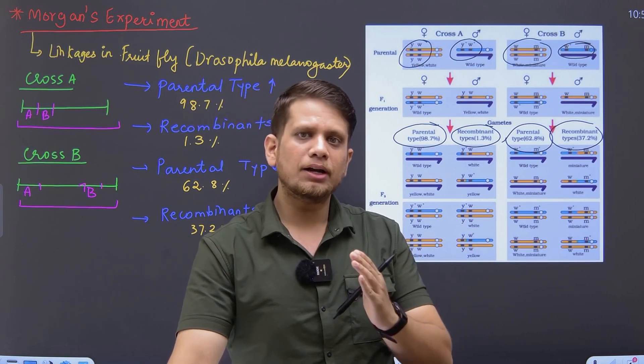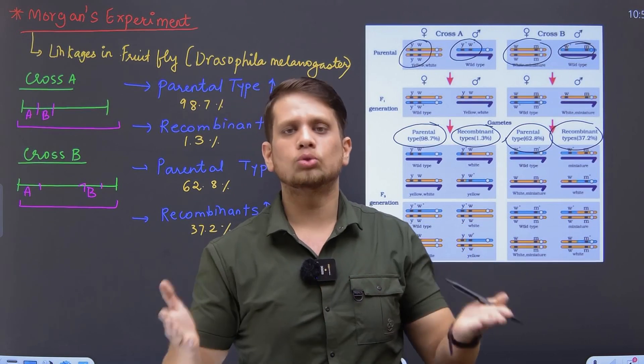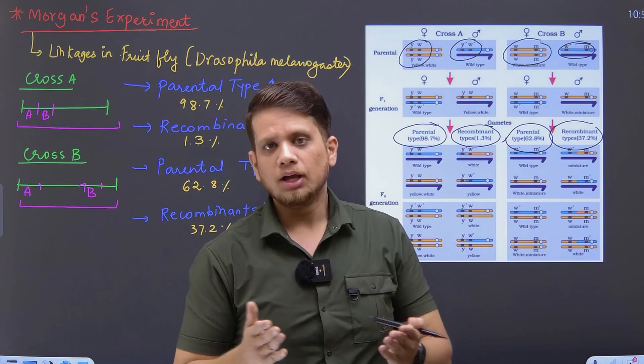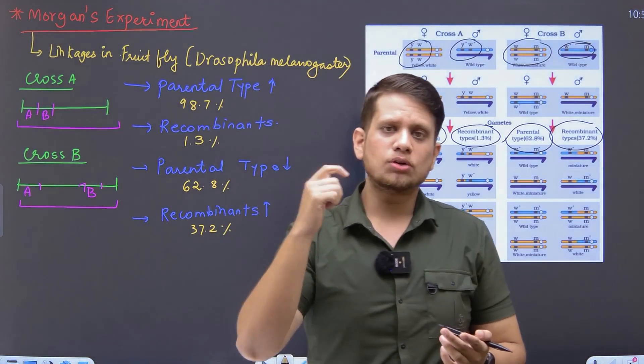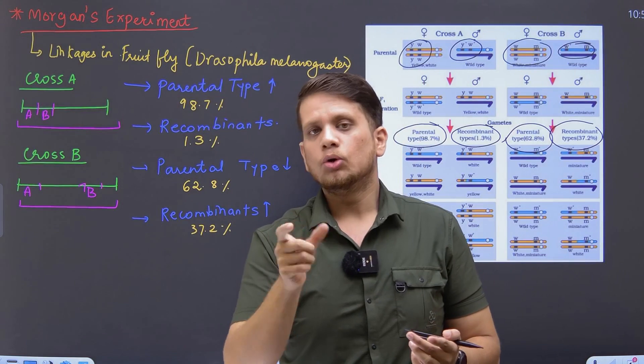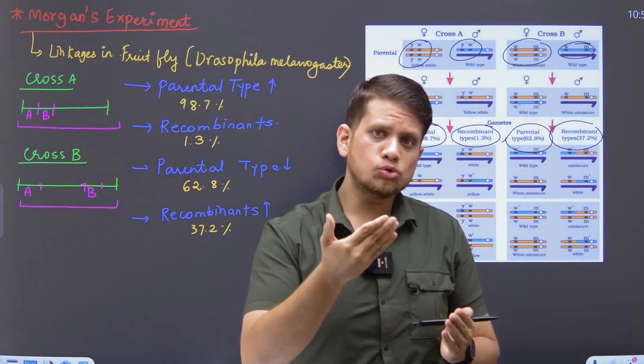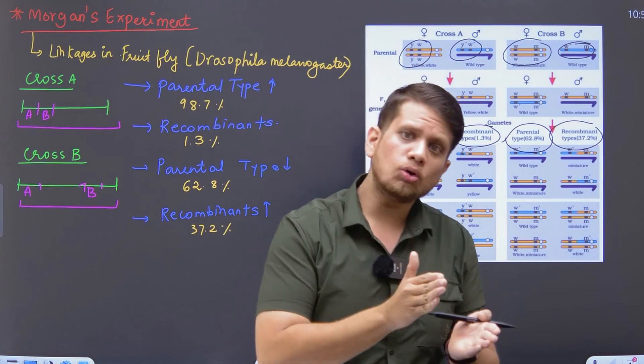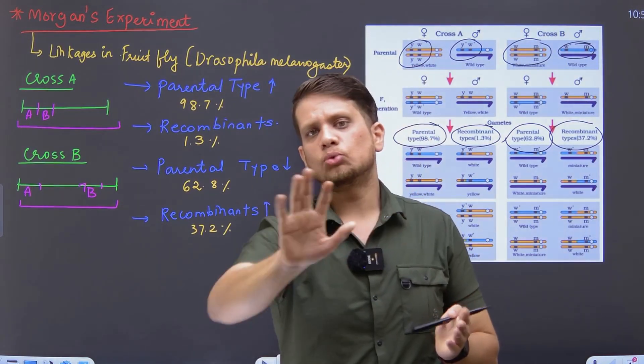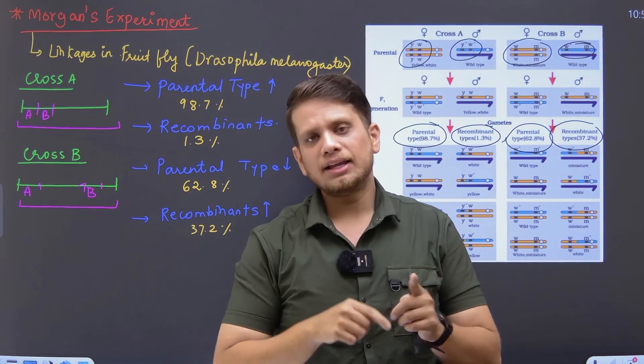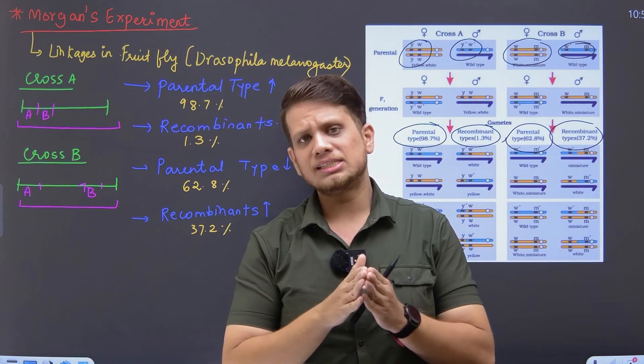Linkage and independent assortment are very different students. Very different concepts. So therefore, he was that person who actually talked about that genes on the same chromosome, being close together, is not always necessary. And there is also a possibility that genes can be far away.